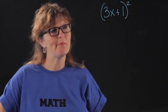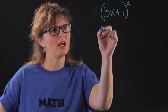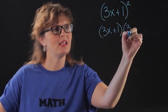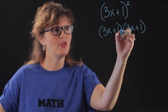So what does it mean to square something? It means there's two copies of it multiplied with each other. So squaring a binomial means that we have two identical copies and they're being multiplied.